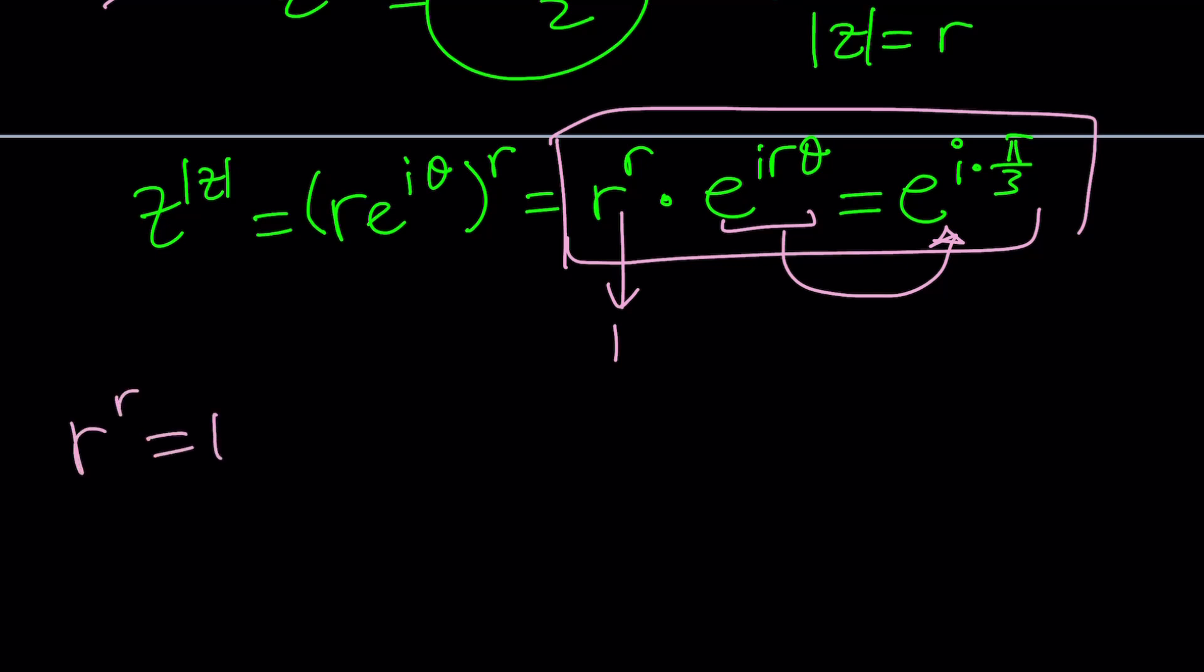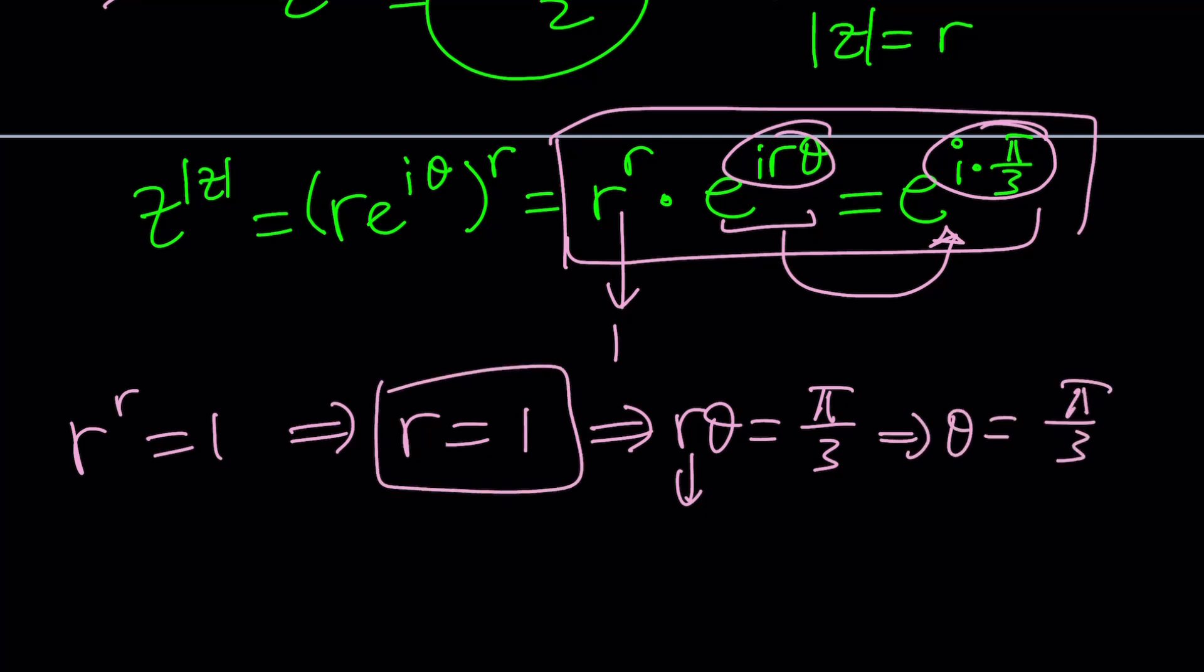If r to the r equals one, then r equals one because r needs to be non-negative. So r can't be zero, right? And then this also gives us this equals this, which is r theta equals pi over three. But r is one, so theta is pi over three. We have r, we have theta.